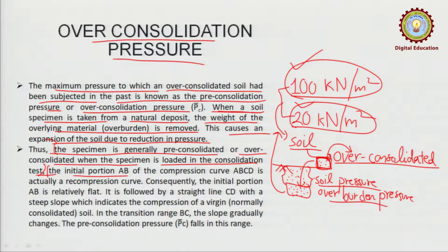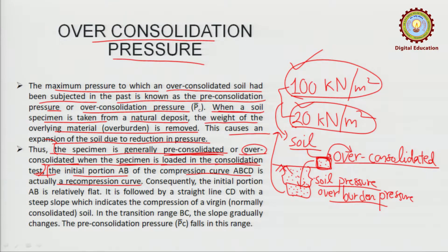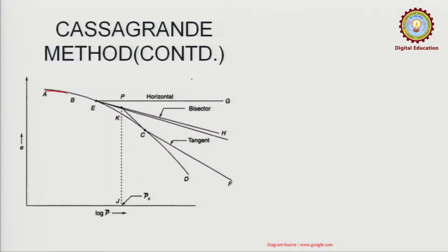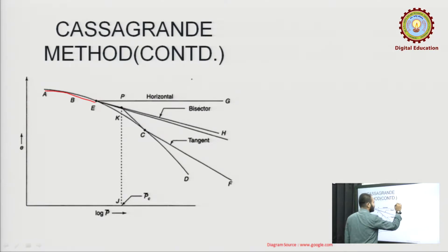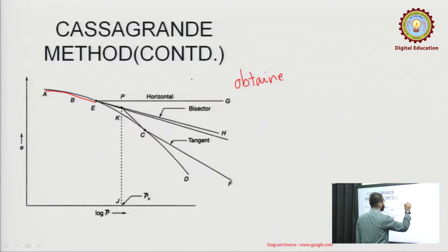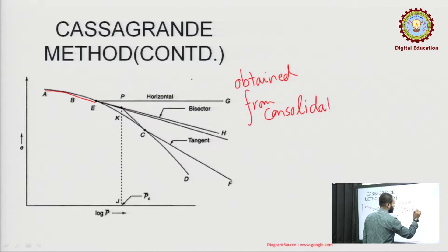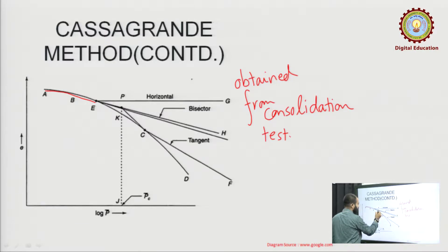In general, we get an over-consolidated soil from the specimen used in the consolidation test. Now going to the graph: the initial portion AB of the compression curve ABCD is the recompression curve. This graph is obtained from the consolidation test. We have two parameters: e (void ratio) and log p-bar (effective stress).